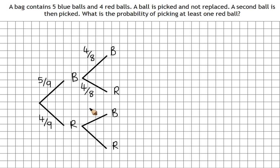Looking along this branch here, one ball's gone, so that's eight balls. A red's gone, so we've still got five blues.